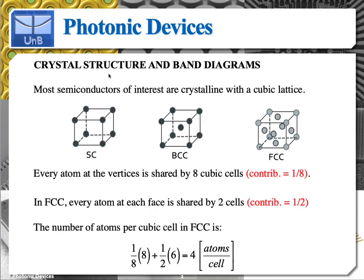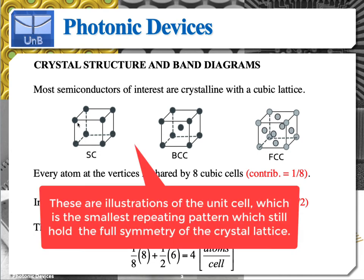Most of the semiconductors that we're going to be interested in have a crystalline structure. So basically, it means that the atoms are arranged in a periodic lattice in three-dimensional space. For example, you have basic lattice structures such as simple cubic, where the atoms are at the vertices of the unit cell.